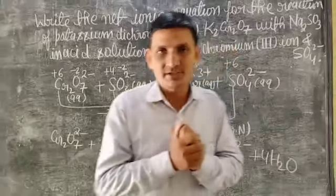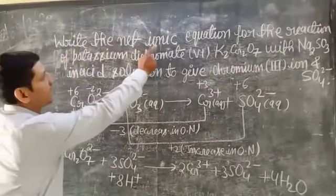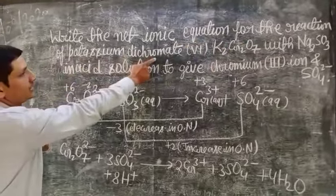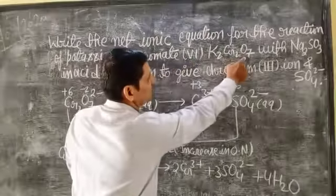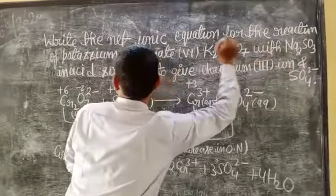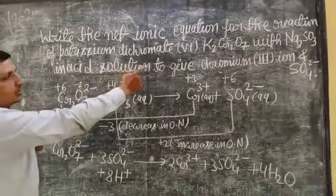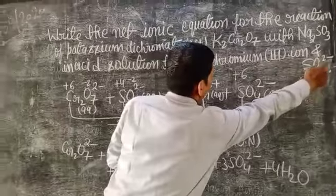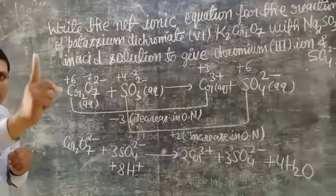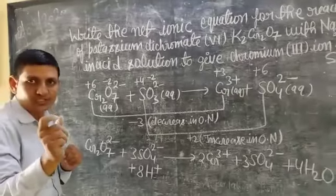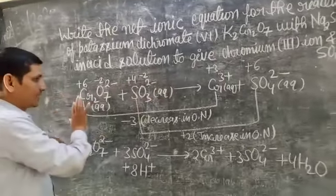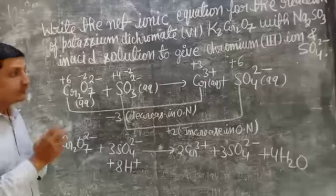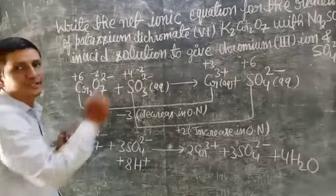Now I am telling you one example reaction. Step 6 — write the net ionic equation for the reaction of potassium dichromate K₂Cr₂O₇ with sodium sulfite Na₂SO₃ in an acidic solution, to give chromium(III) ion Cr³⁺ and sulfate ion SO₄²⁻. Step 1 — write the skeleton or unbalanced equation. Step 2 — write the oxidation number of each element.